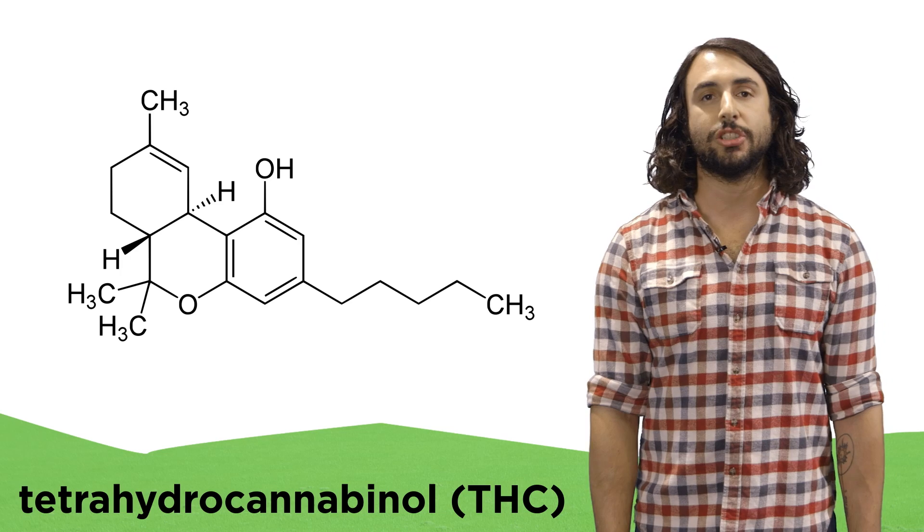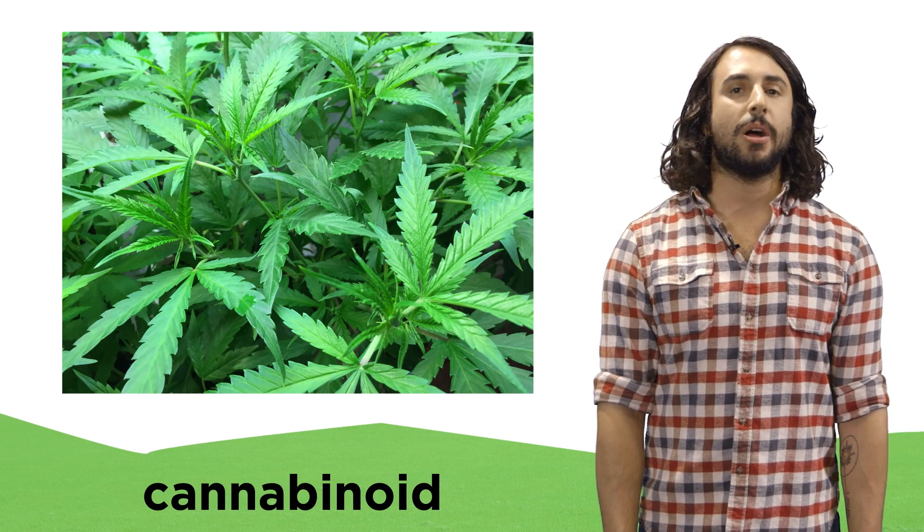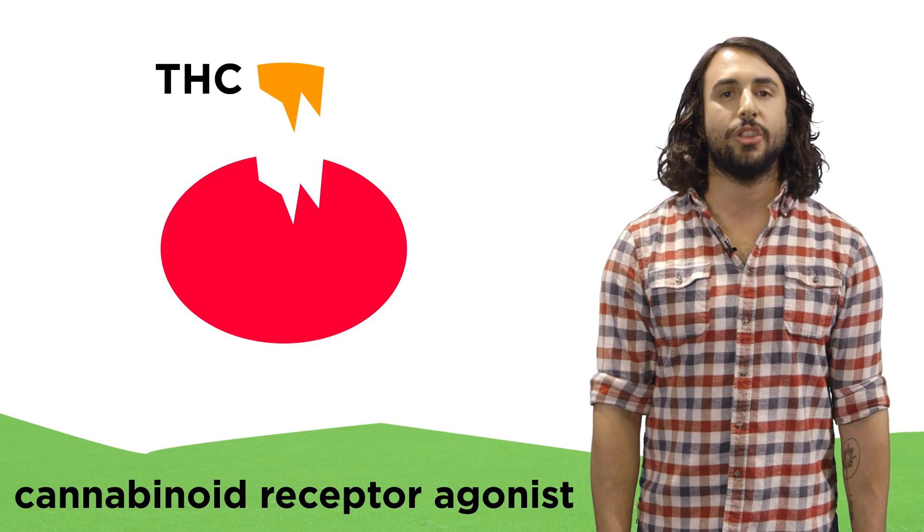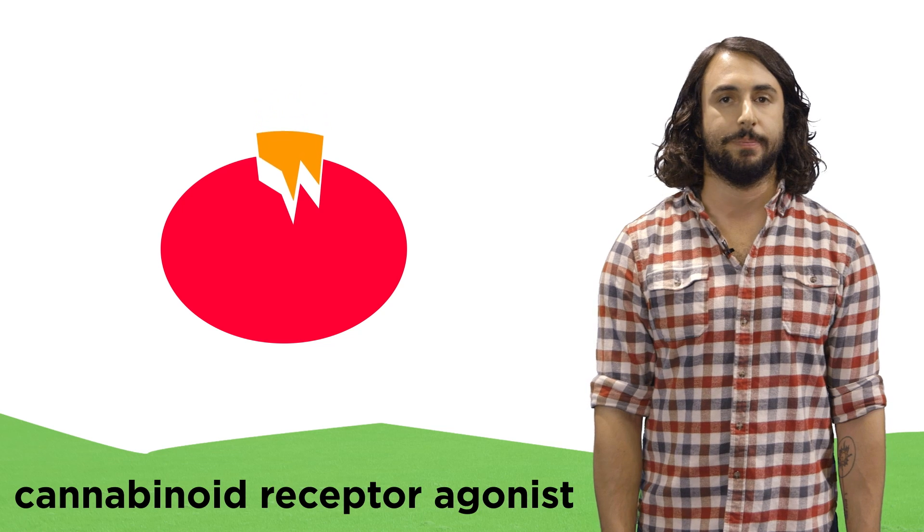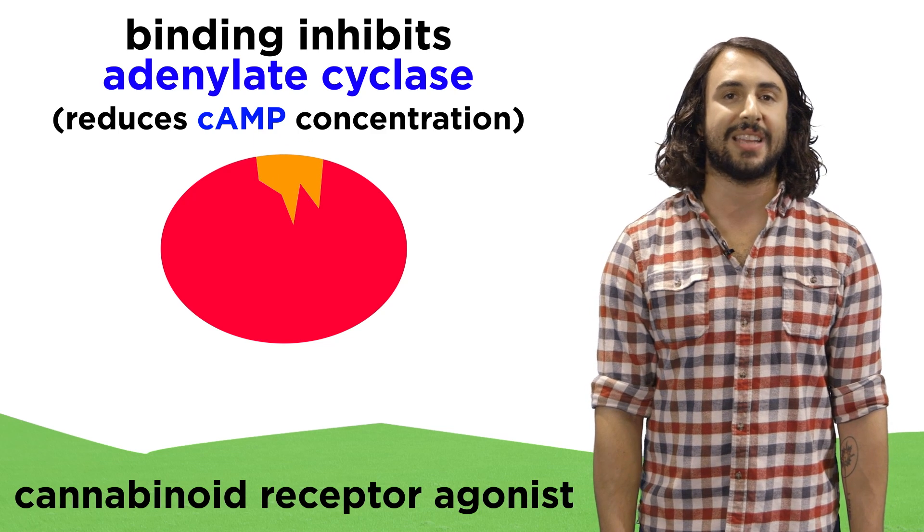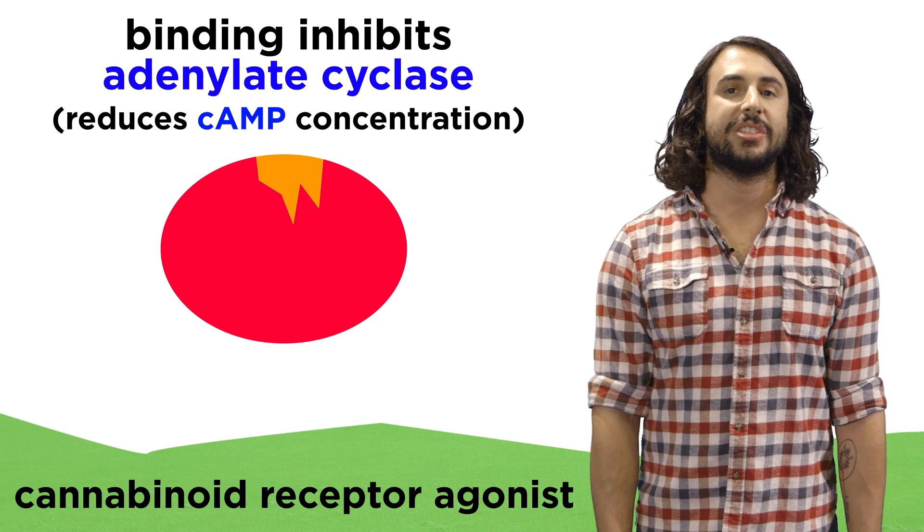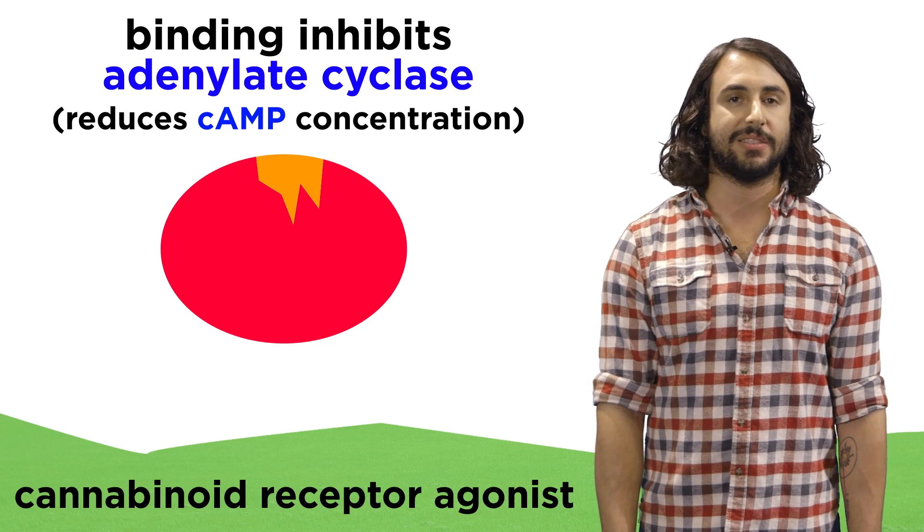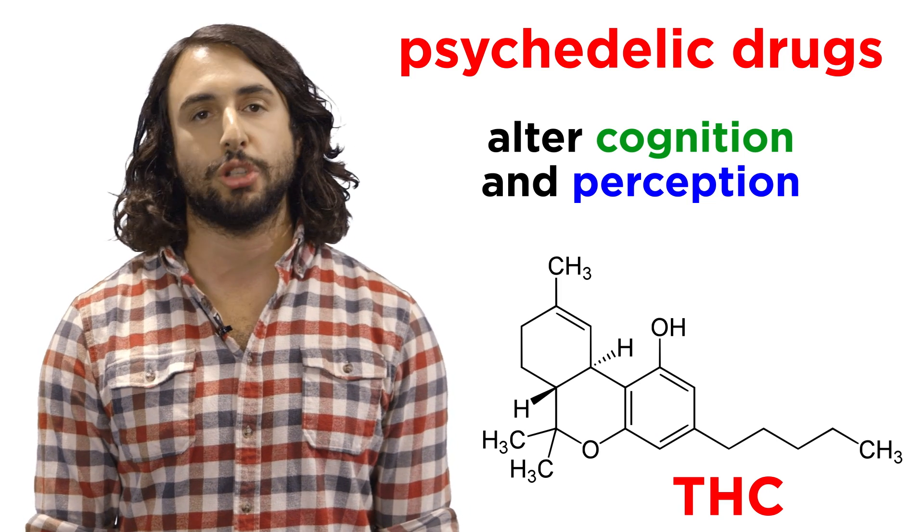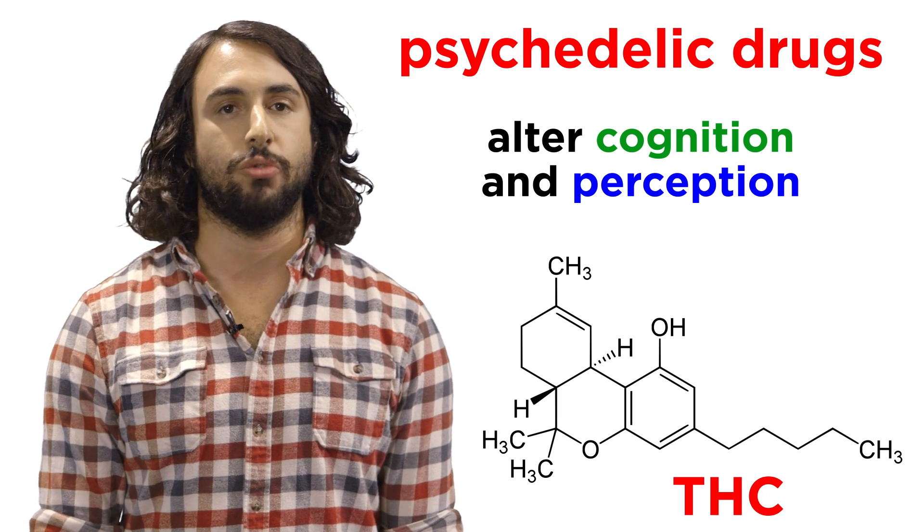Tetrahydrocannabinol, or THC, is found in the marijuana plant and is classified as a cannabinoid. This molecule operates as an agonist for cannabinoid receptors located in the nervous system and immune system. Binding to these receptors will in turn inhibit adenylate cyclase, which means a reduction in the concentration of cAMP, which results in a variety of psychological effects. Because psychological effects include the alteration of cognition and perception, this drug is classified as a psychedelic drug.